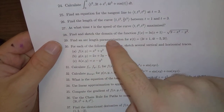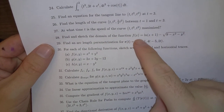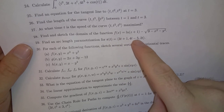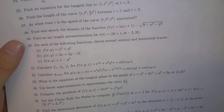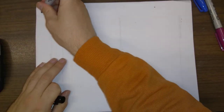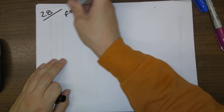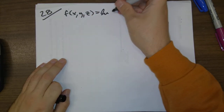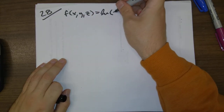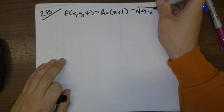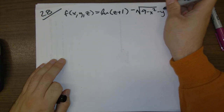Problem 28: Find and sketch the domain of this function. There's a typo — that should be f of x, y, z is natural log of z plus 1 minus square root of 9 minus x squared minus y squared.